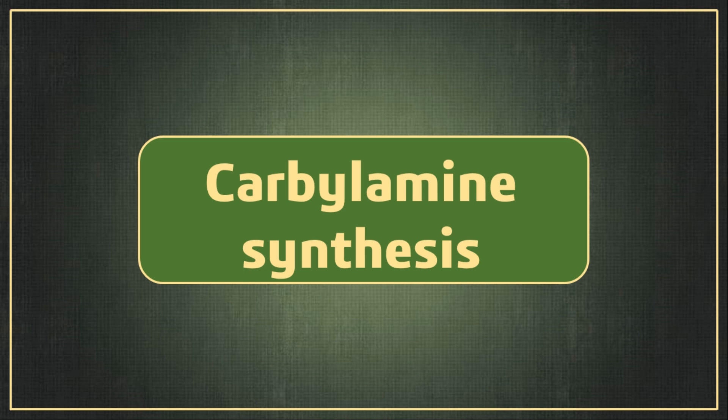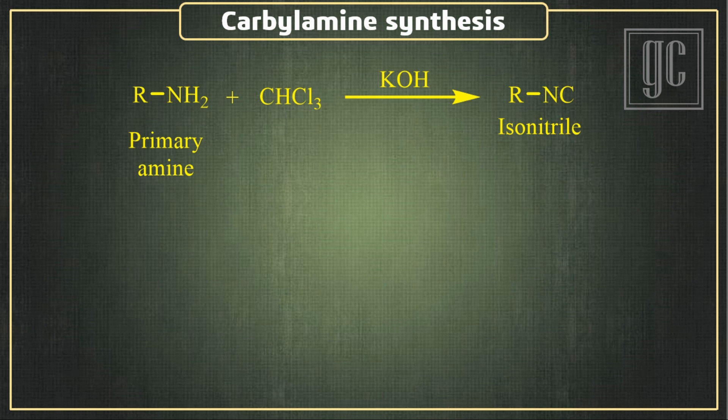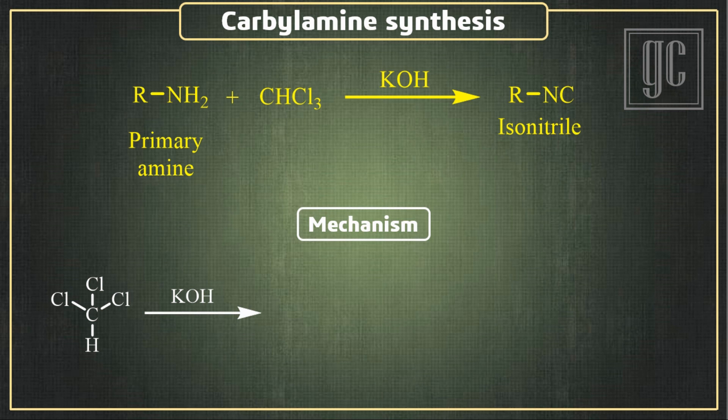In this video we are going to discuss carbylamine synthesis. In this reaction, primary amines and chloroform are converted into isocyanides in the presence of a strong base, for example potassium hydroxide. Carbene forms as an intermediate in this reaction. Now we are going to discuss the mechanism of this reaction; the first step is the synthesis of carbene in the presence of a strong base.